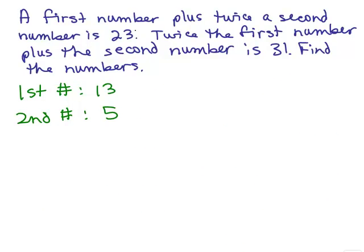It says a first number plus twice the second number. Well, the first number is 13, and then plus twice the second number. The second number was 5, so twice that is 10, and that gives me 23, which is exactly what it was supposed to do.